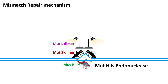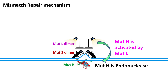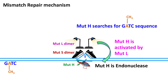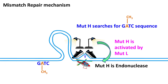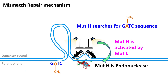Once bound, the endonuclease activity is activated by MUT-L. The MUT-H then searches for the nearest GATC sequence with methylated adenine. During this search, the DNA is usually looped out. Once the GATC sequence is identified, the MUT-H protein cleaves at the daughter strand.